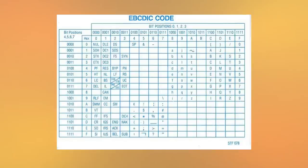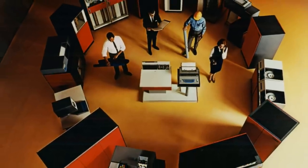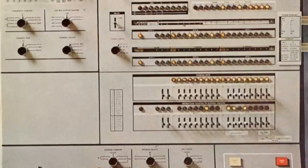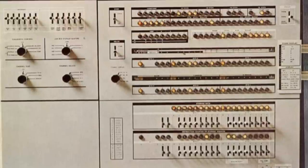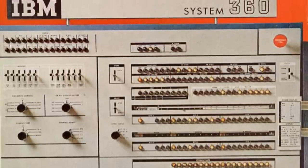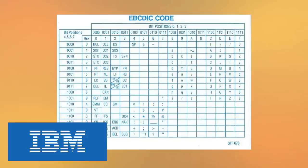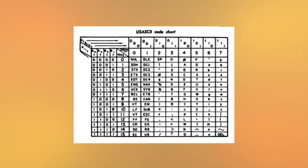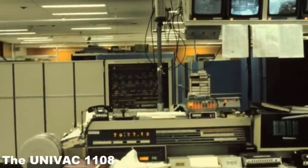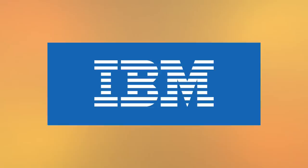ASCII will just get implemented in the next model, right? Nope. The System 360 revolutionized the computer industry and became incredibly popular, leaving IBM with no choice but to keep support for EBCDIC. At this point, EBCDIC was like Frankenstein's monster — ugly, mashed together, and beyond the control of its creator. ASCII died down, only really being supported by one UNIVAC machine, as IBM focused on interoperability between their own systems.